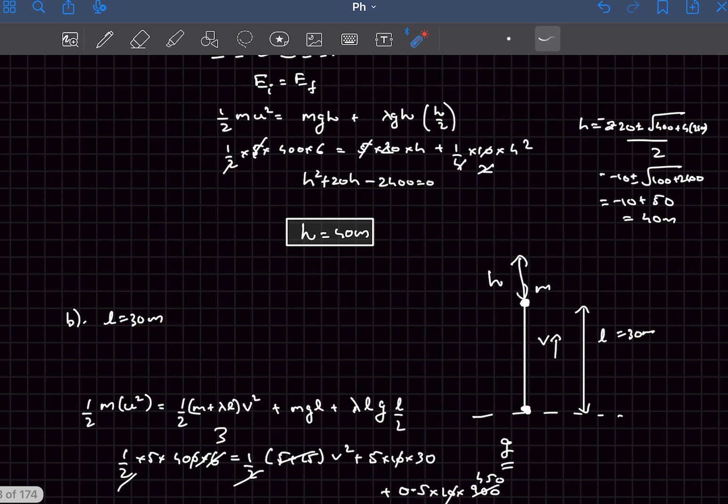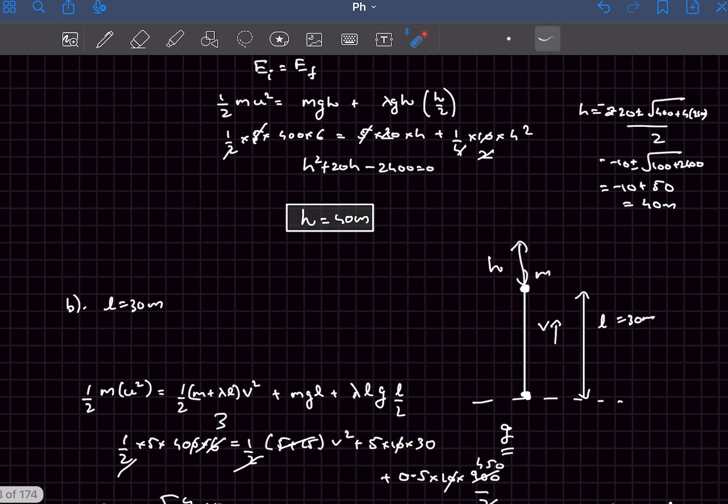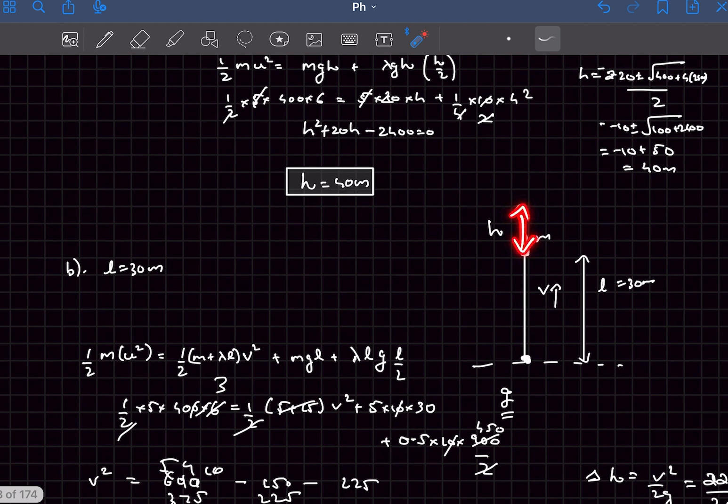Now in option b, it's given that the length of the string is just 30 meters. What will happen is after the ball rises to a height of 30 meters, the ball plus the chain system will have some velocity v, and then they as a system will move up in the air and the deceleration would be just g.